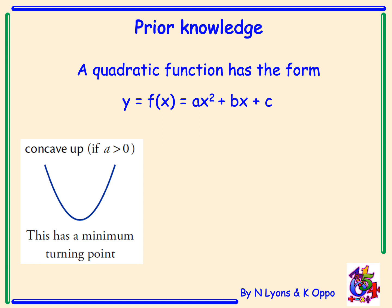Now if the coefficient of the x², a, is a number bigger than zero, is a positive number, then our function is concave up. That means it's a happy curve and it has a minimum turning point.